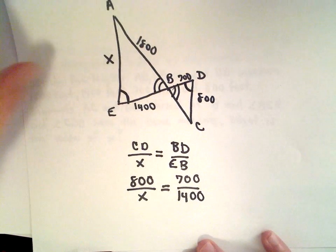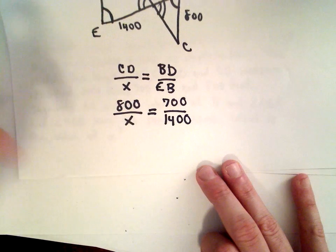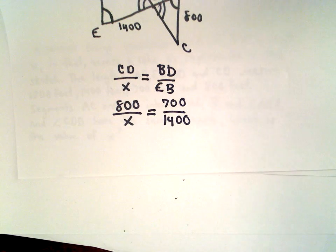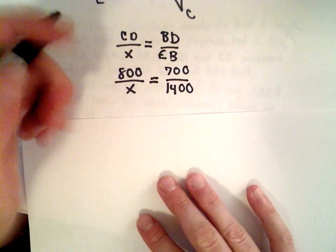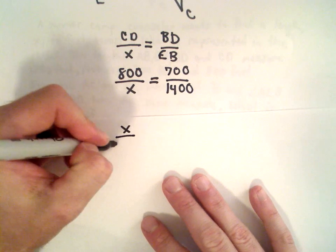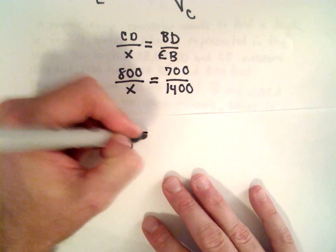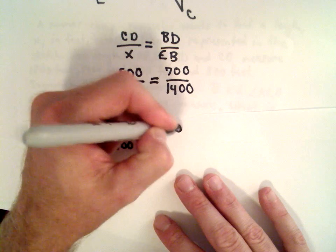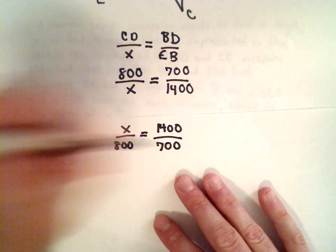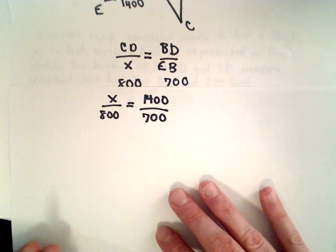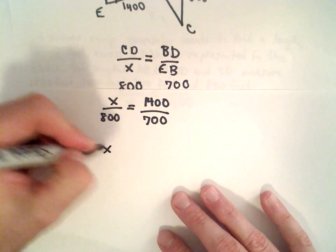So now all we have to do is simply solve this for x and we'll have our solution. Let me take just one or two extra steps here for the algebra. One thing we can do is we can simply flip both fractions, so we can write this as x over 800 equals 1400 divided by 700. And then to solve for x, we can simply multiply both sides by 800.